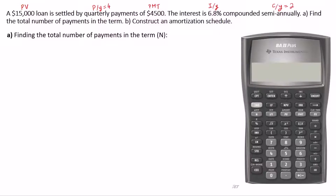Since there isn't any indication of the timing of the payments, whether payments are made at the beginning or end of the payment period, as a default we consider payments to be made at the end of the payment period. Make sure the timing is set to end of payment period, which is the default. If you don't see BGN on the top of the display, it means it is set to the end.